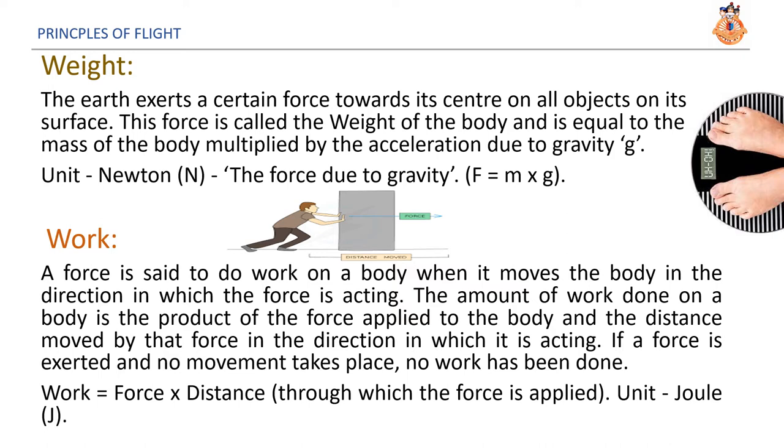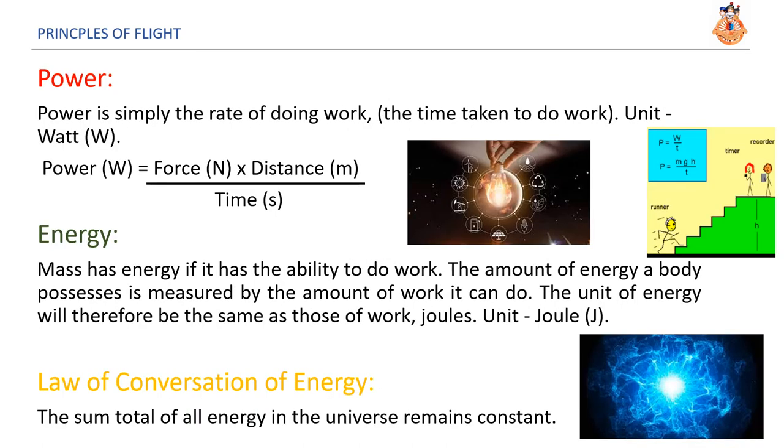Work. A force is said to do work on a body when it moves the body in the direction in which the force is acting. The amount of work done on a body is the product of the force applied to the body and the distance moved by that force in the direction in which it is acting. If a force is exerted and no movement takes place, no work has been done. Work is equal to force into distance through which the force is applied. The unit of work is joule. Power. Power is simply the rate of doing work. Or in other words, it is the time taken to do work. The unit of power is watt. Power is equal to force into distance divided by time.